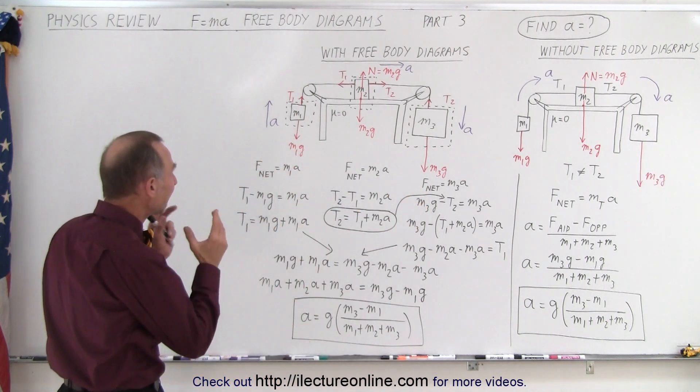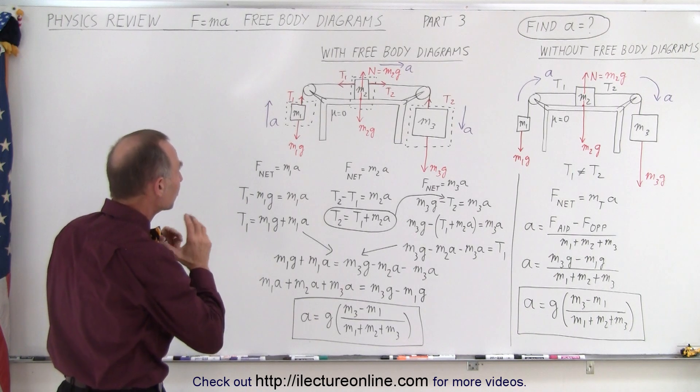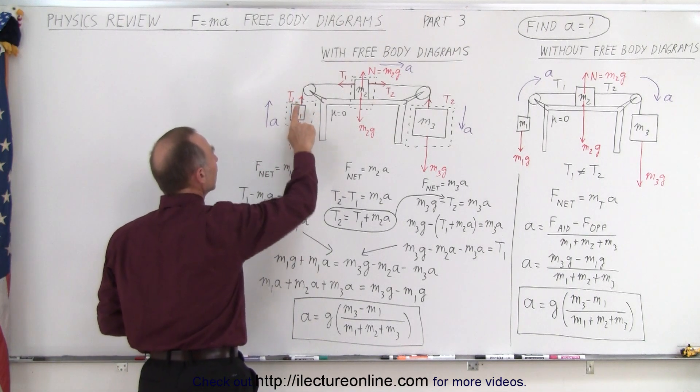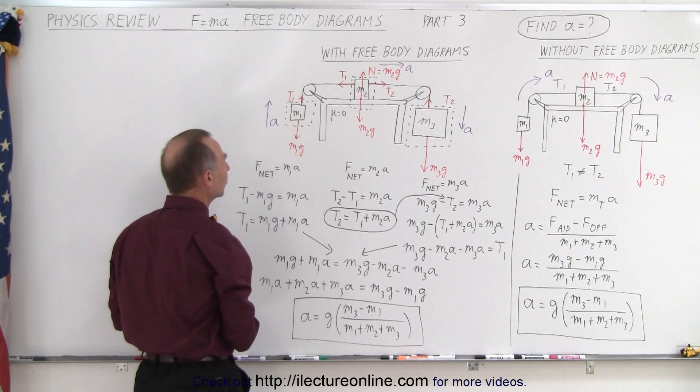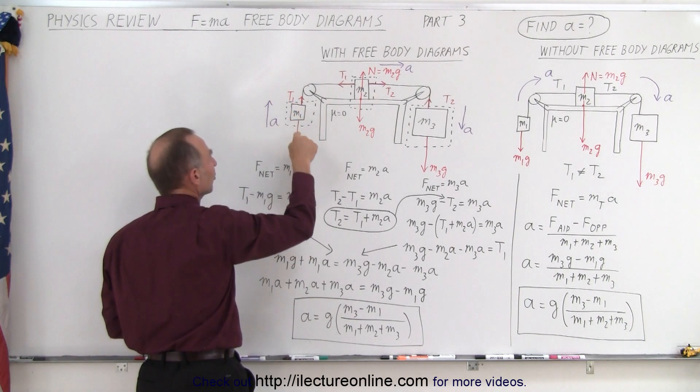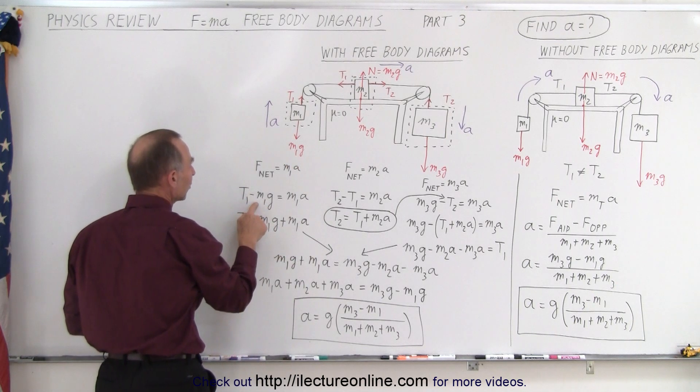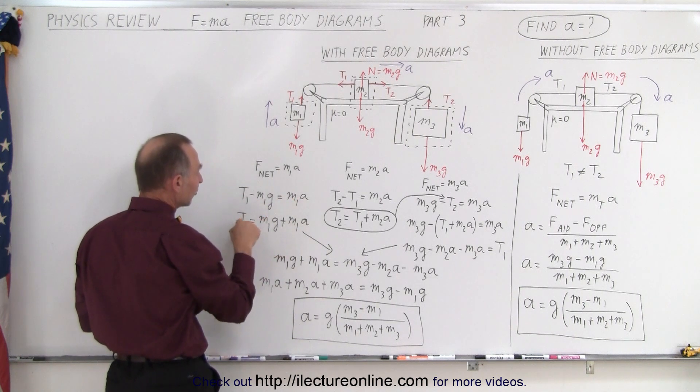So in each case, we have to determine the net force acting on that free body diagram object. Notice that there's two forces here, T1 acting upward, M1G acting downward, and we know this M1 will accelerate in an upward direction. So T1 becomes the aiding force, M1G becomes the opposing force. So we have the aiding force minus the opposing force equals the mass times acceleration. We can solve this for T1.